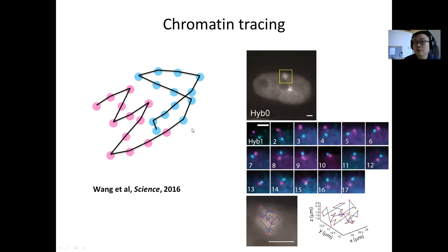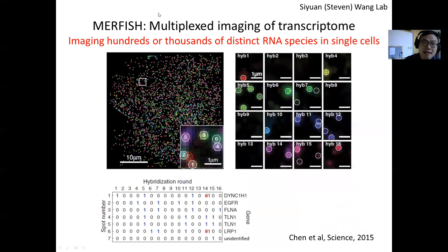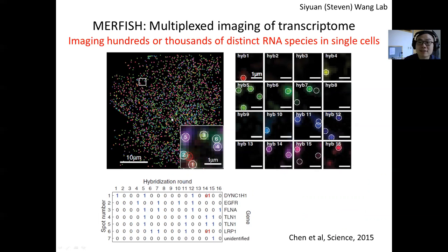This technique really opened up the field called image-based spatial genomics. In the past several years, many labs have applied this technique to different length scales and to different model organisms, including several more works from us. In a related development, we invented a technique called MRFISH, which enables multiplexed imaging of hundreds to thousands of distinct RNA species in single cells at the single molecule level. It's like single-cell RNA sequencing, except that you also retain all the molecular position information inside a cell and the cellular position information inside a tissue — a new type of high-dimensional omic data.